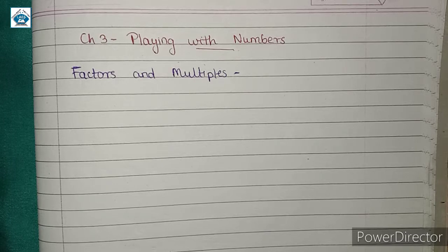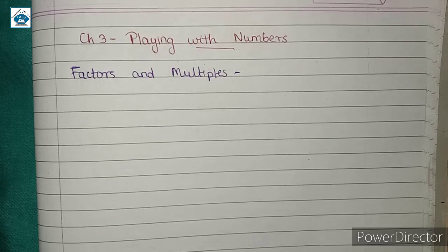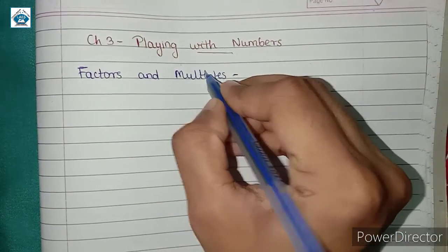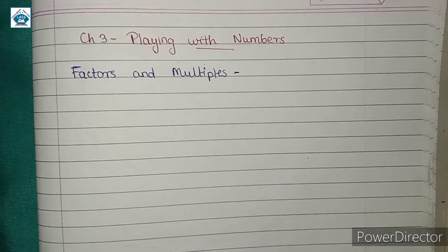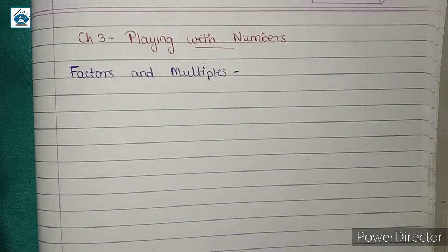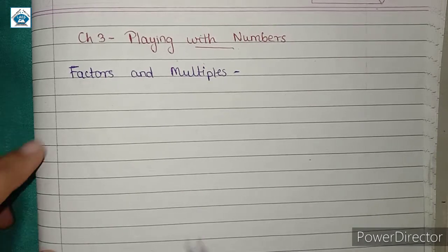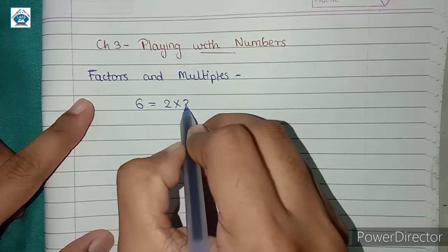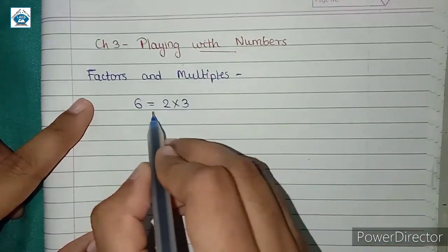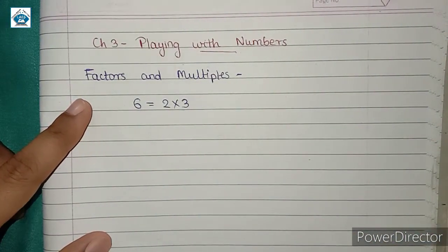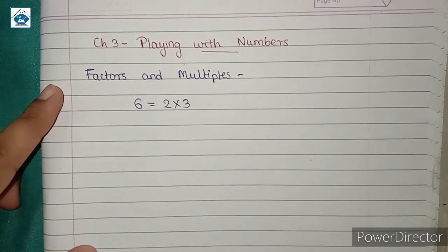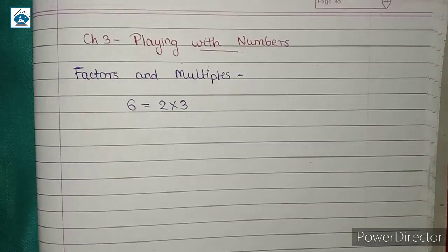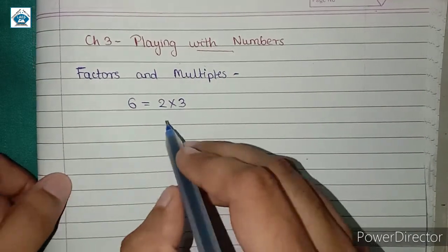Hello students, let us now begin Chapter 3: Playing with Numbers. The first topic we are going to discuss is factors and multiples. To differentiate between factors and multiples, let us first consider an example. We know that 6 can be written as 2 multiplied by 3, because 6 is equal to 2 multiplied by 3.